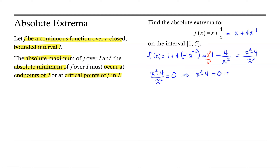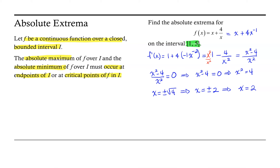If I multiply both sides of this equation by x squared, I end up with x squared minus 4 equals 0. If I add 4 to both sides, I end up with x squared equals 4. And then if I take the square root of both sides, I get x equals plus or minus the square root of 4, which means we have x equals plus or minus 2. Now I need to compare this to what I know about the interval. Notice that only one of those values lies within the interval we're interested in, so we will focus on simply x equals 2, as it is in the interval from 1 to 5.